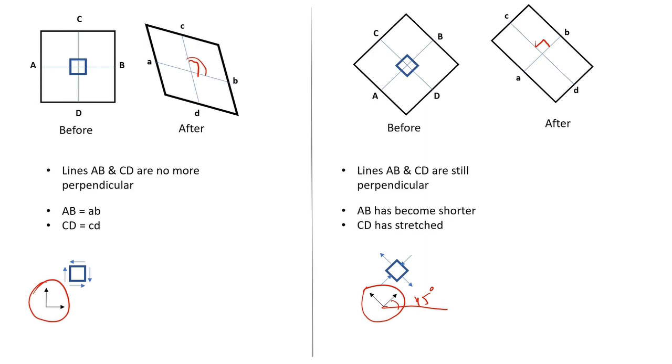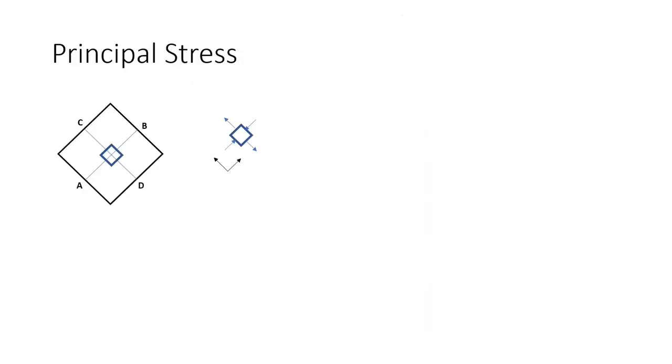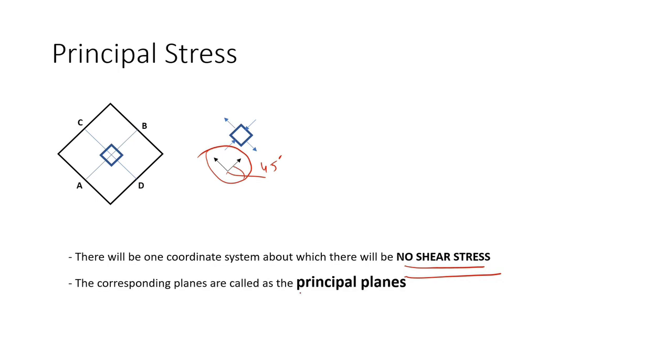Let's now link this to the principal stresses. There will be one coordinate system about which there will be no shear stress, which is this one inclined at 45 degrees. The corresponding planes are called as the principal planes, which are these two ones. Lastly, the corresponding normal stresses are called as the principal stresses, which are these two ones.